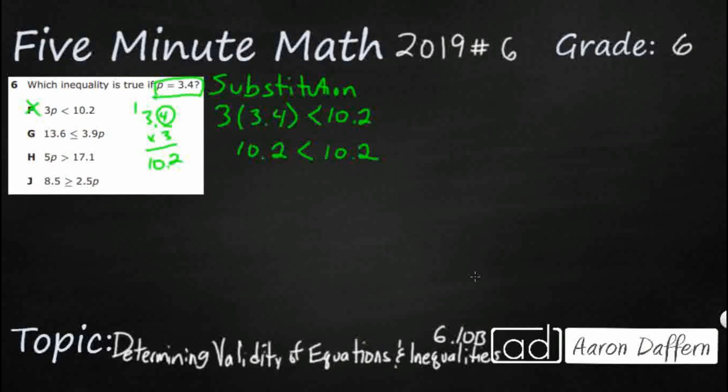So let's look at this next one. 13.6 is less than or equal. See, if we had less than or equal, that would have worked. 3.9 times 3.4. So once again, let's do 39 and 34. So that's going to be 36. That's 12. That's 15. Let's see. That is going to be 27. That's 9, 11.